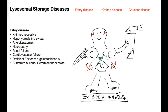Fabry disease is the only lysosomal storage disease that's X-linked recessive, and for that reason I drew a green X in his chest plate. He's got some armor and an X in the middle of it to help remember X-linked recessive. This also means that all the rest of the lysosomal storage diseases are autosomal recessive — a quick way to remember all of the inheritance patterns.